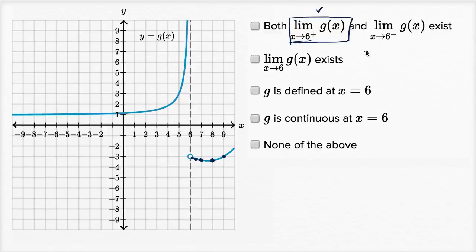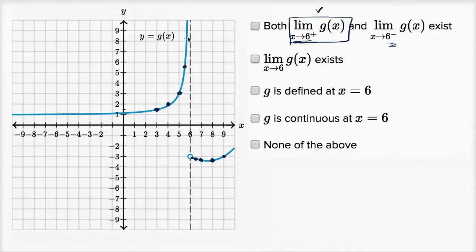Now let's think about the limit as x approaches six from the left-hand side. When x equals three, g of three is a little more than one. g of four looks like a little less than two. g of five looks close to three. g of five point five is between five and six. g of five point seven five looks like it's approaching nine. As x gets closer and closer to six from below, it looks like we're unbounded — we are approaching infinity.